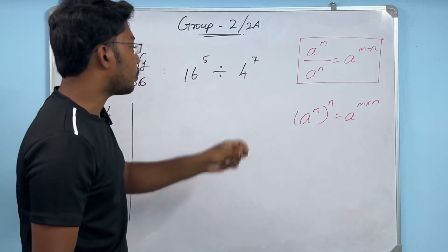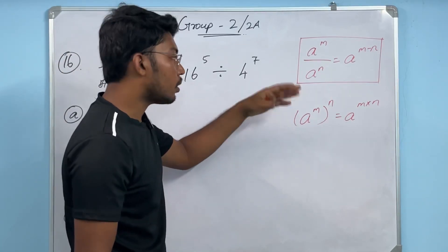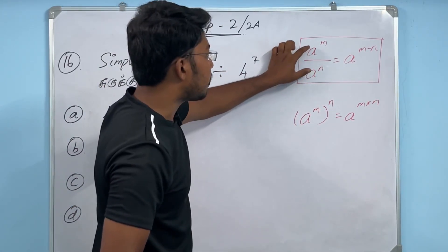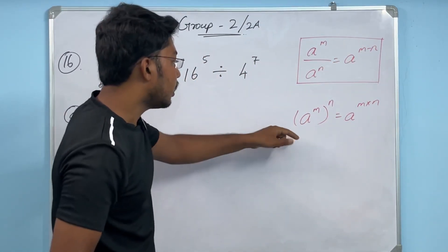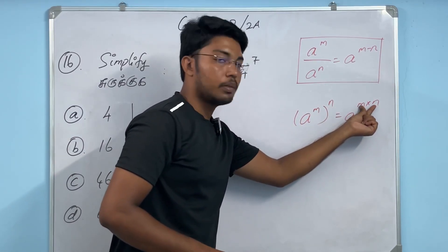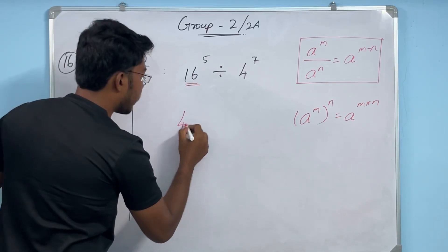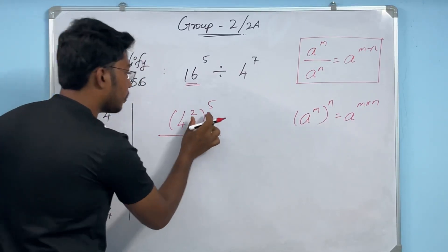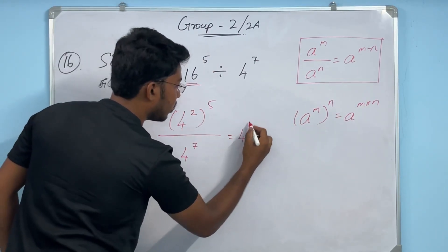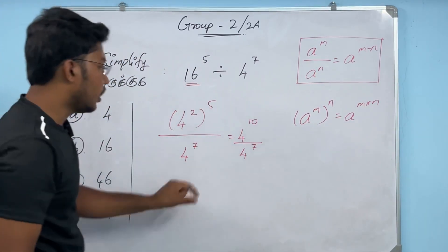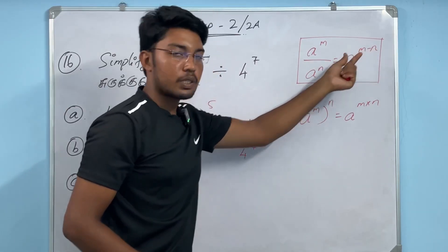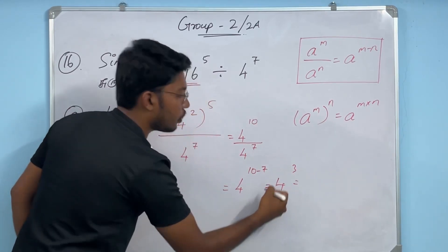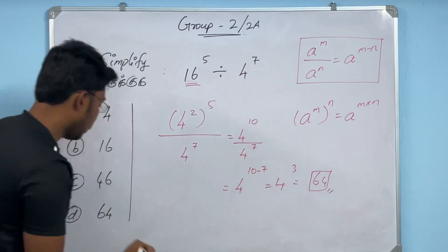Question: 16 power 5 divided by 4 power 7. We will use exponent properties. Property 1: (a^m)^n = a^(m×n). Property 2: a^m ÷ a^n = a^(m−n). Since 16 = 4², rewrite as (4²)^5 = 4^10. So we have 4^10 ÷ 4^7. The bases are the same, so subtract powers: 10 − 7 = 3. Therefore 4³ = 64. Answer: 64.